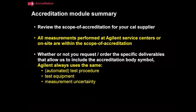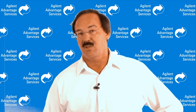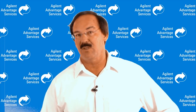I'd like to move to the closing points. Whenever you consider two laboratories, please review the scope of accreditation for the individual calibration suppliers — it's very important. We at Agilent feel it's so important that all the measurements we make are always within our scope of accreditation. And finally, whether or not you request the specific deliverables that allow us to include the accreditation body symbol, at Agilent we will always use the same automated test procedure, the same test equipment, and the same associated measurement uncertainty — so you'll always know that we're making accurate measurements, regardless of which of our services you select.